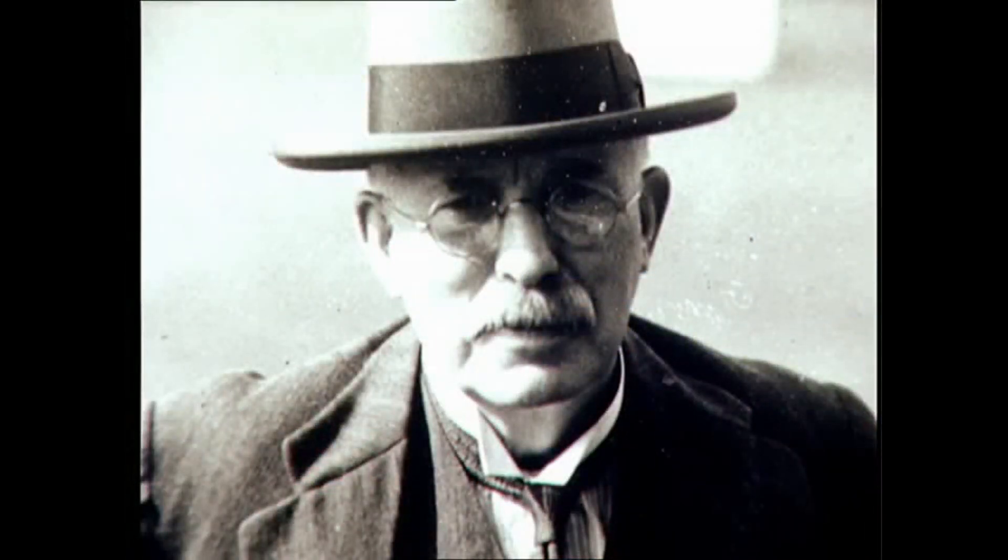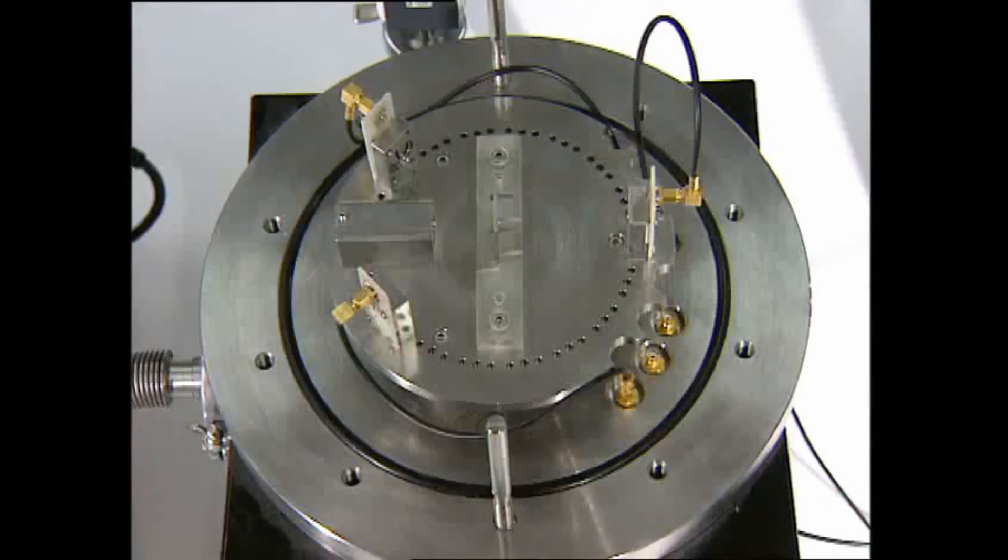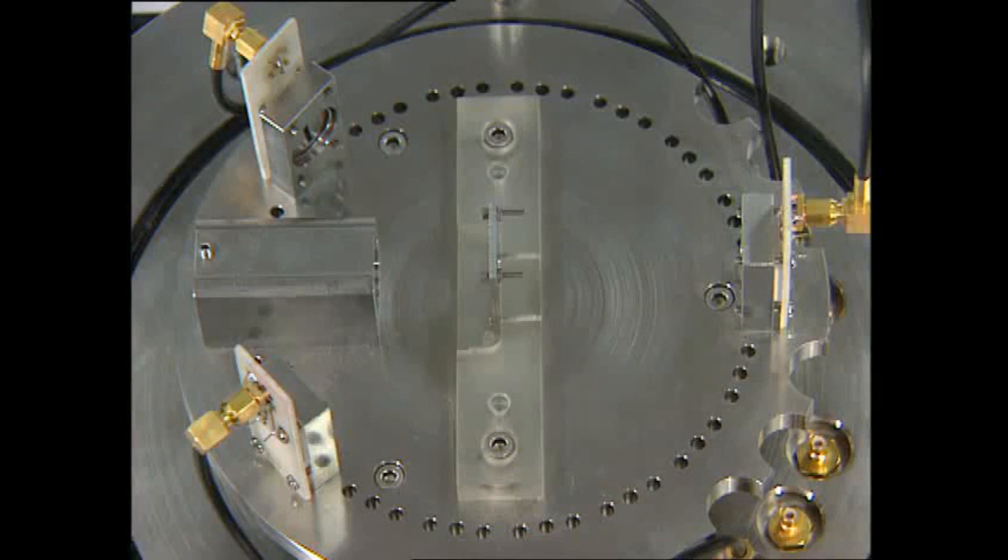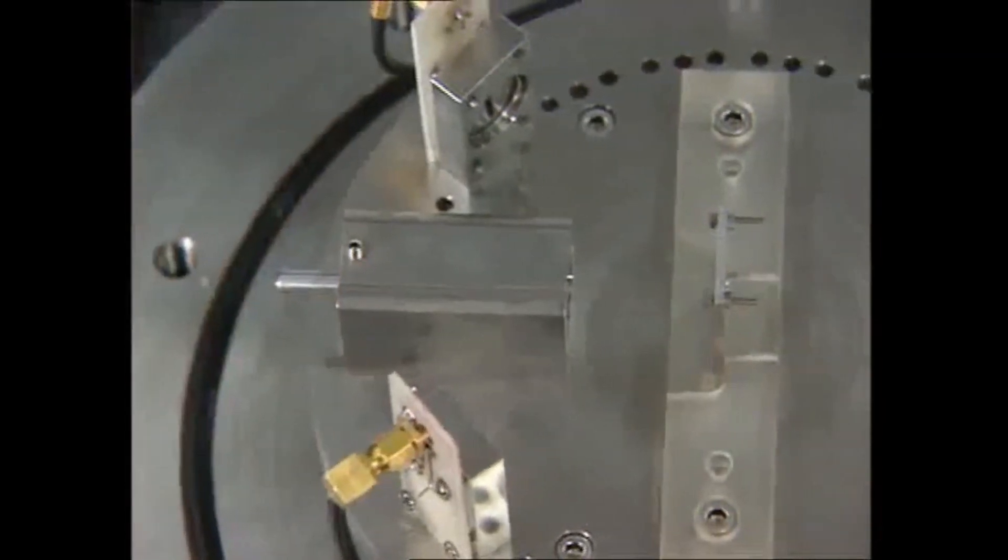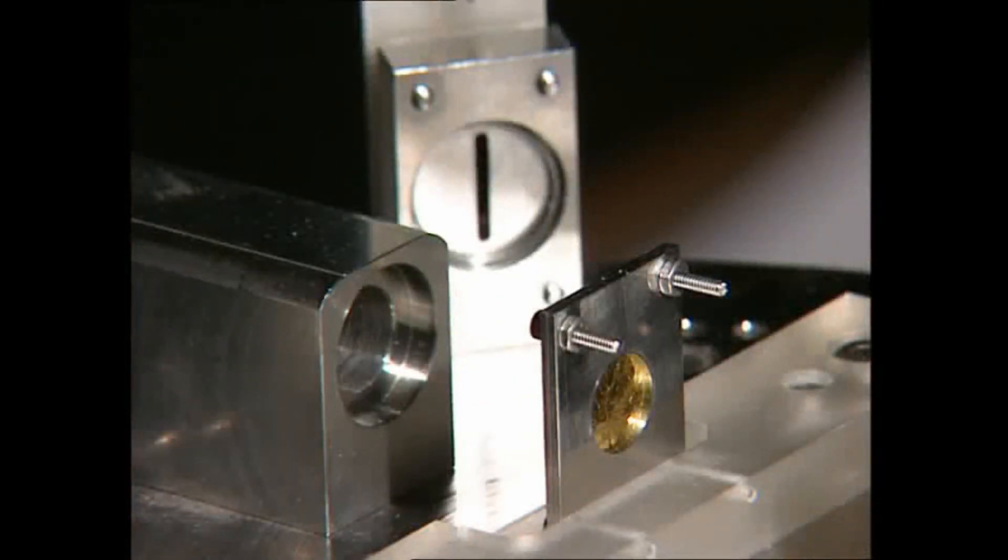In 1911, Ernest Rutherford made the next major breakthrough in atomic structure. He was examining the results of an experiment based on this type of setup. A radioactive source emits a narrow beam of radioactive particles. This is directed at a target of thin gold foil.